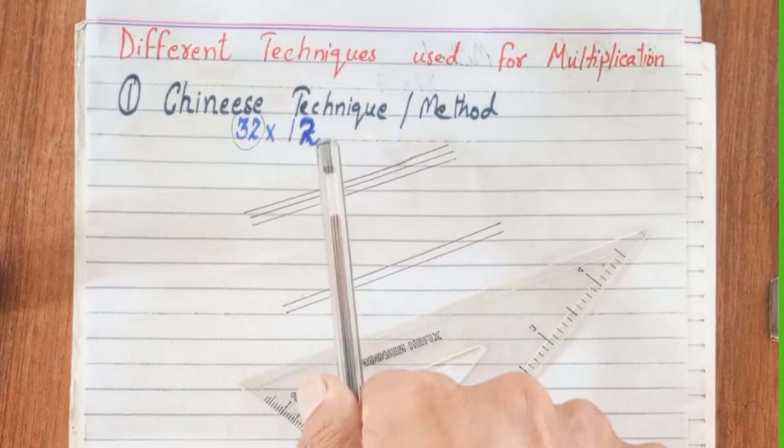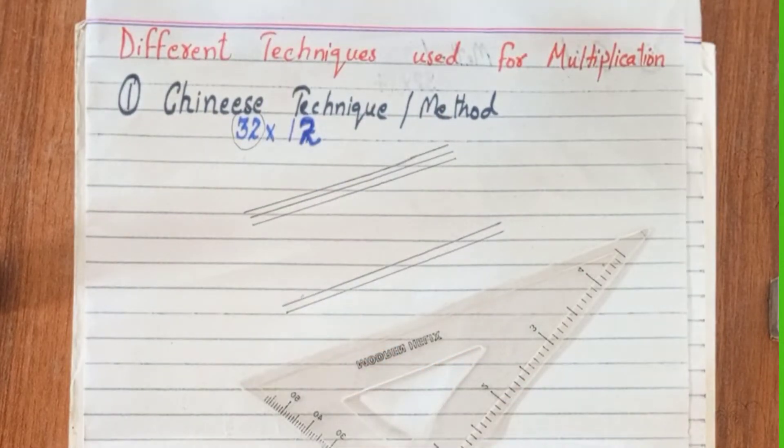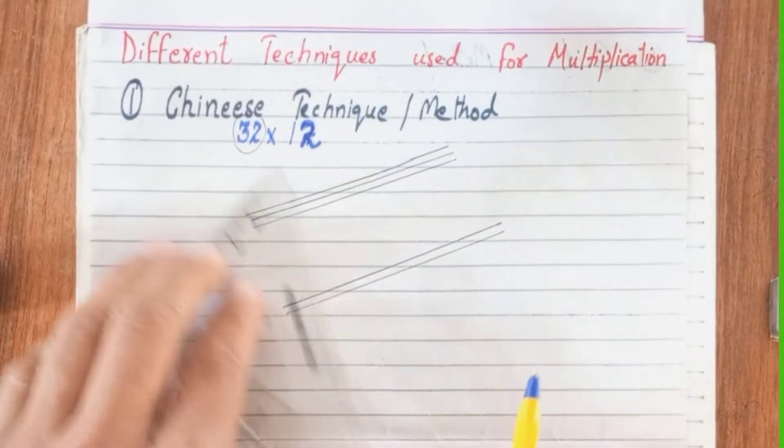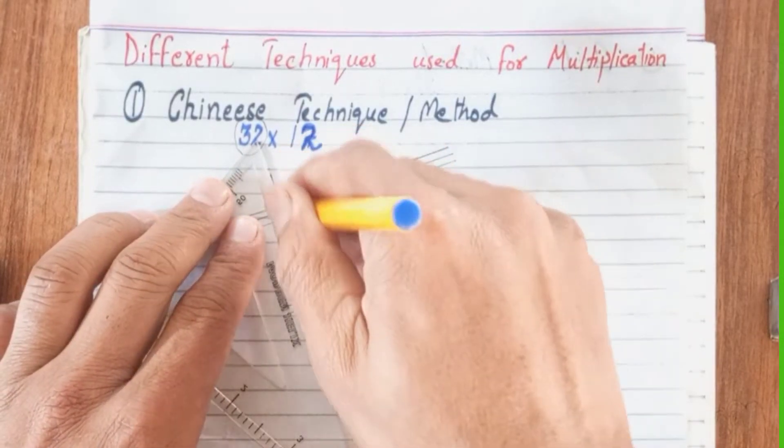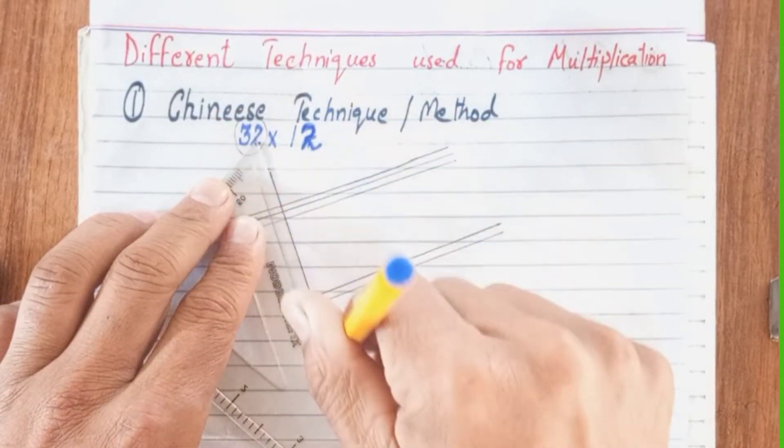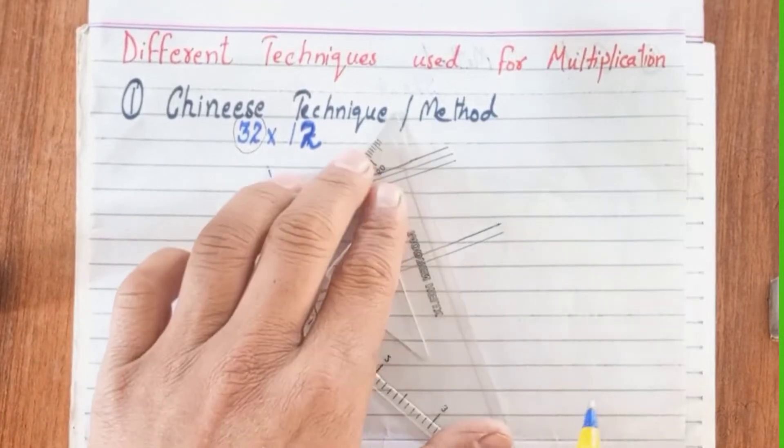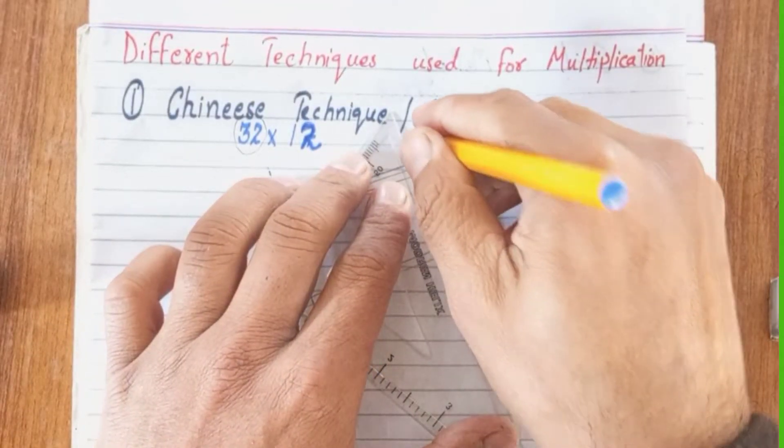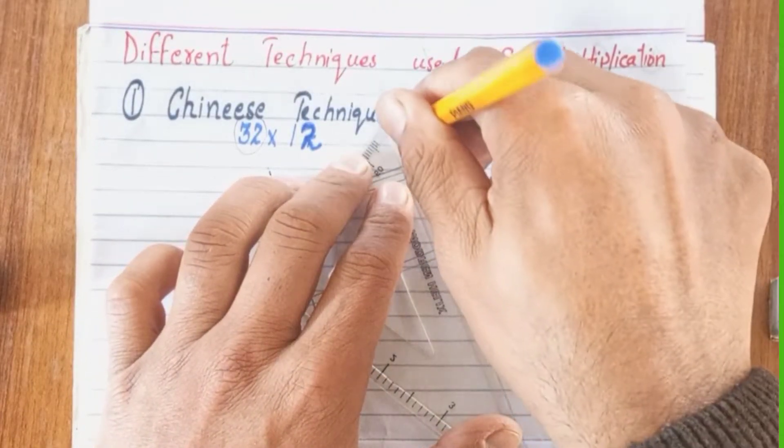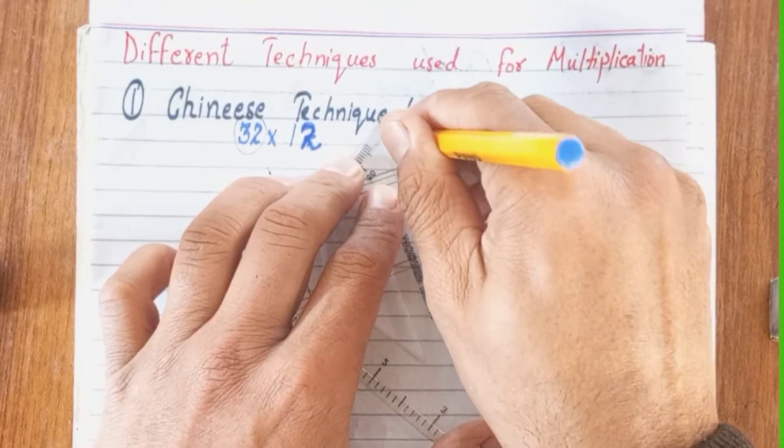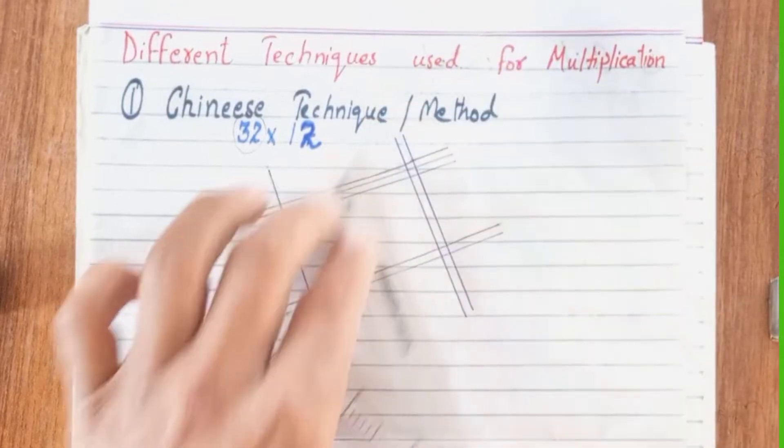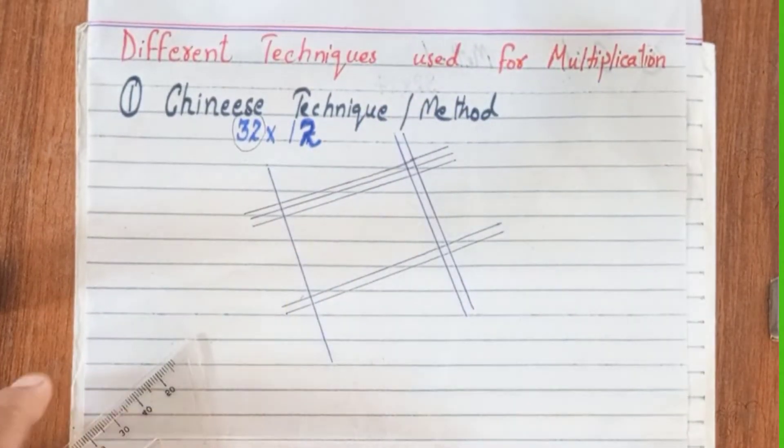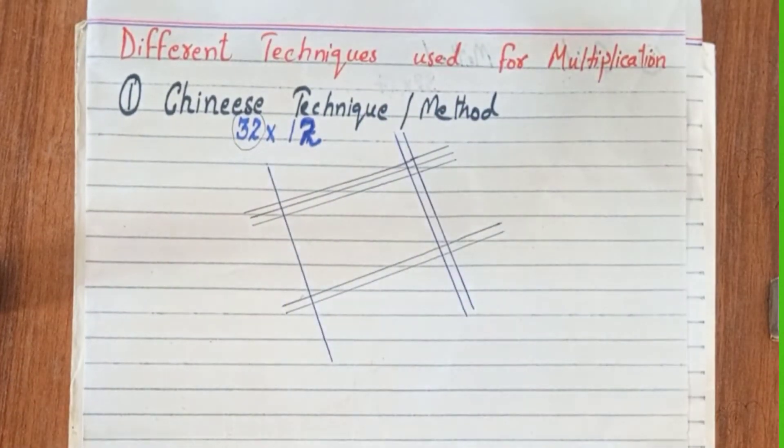Now we will draw lines for the second number. Remember our second number is 12, so we start with the tenth unit and draw one line. After having some distance, we will draw the unit digit's lines. We have two, so we draw two lines here.